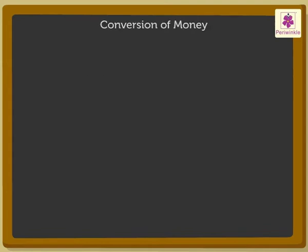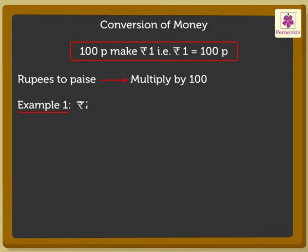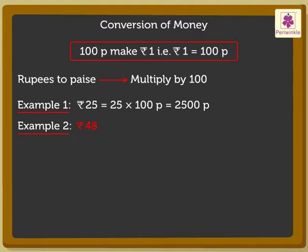Now, let us learn how to convert rupees to paise and paise to rupees. We know that 100 paise make 1 rupee. That is, 1 rupee is equal to 100 paise. So, to change from rupees to paise, we multiply by 100. Let's convert 25 rupees into paise: 25 rupees multiplied by 100 is equal to 2,500 paise. Now, let's convert 48 rupees: 48 rupees is equal to 48 into 100, which is equal to 4,800 paise.